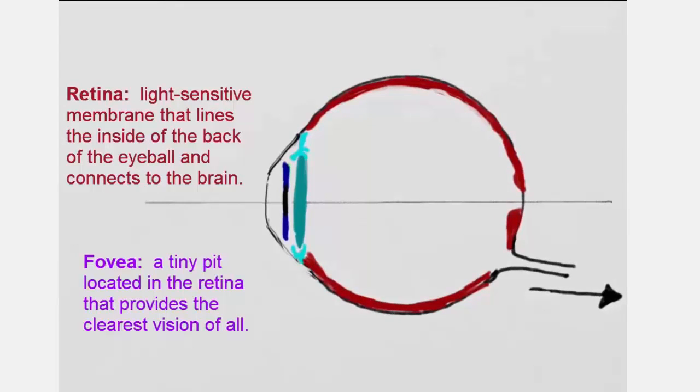The fovea is a tiny pit located in the retina that provides the clearest vision of all. The lens focuses the center of our visual space onto the fovea.